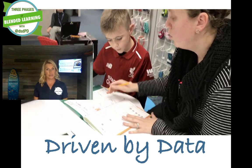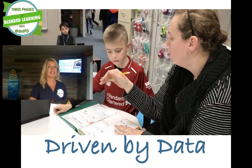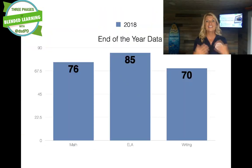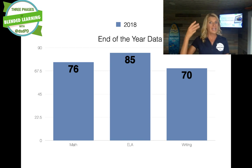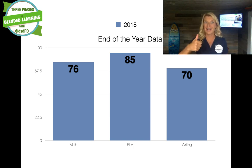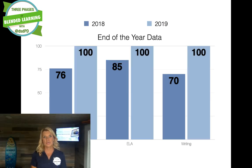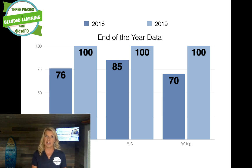This teacher and her co-teacher had data points from before they worked with Marsha Kish — these were their scores in 2018: 76% of their second graders passed math, 85% passed ELAR, and 70% passed writing. That's great — out of 48 kids, pretty impressive. After they allowed the students to work at their own pace, place, and path using data-driven instruction, their scores went up dramatically. All 48 students passed math, 100% passed ELAR, and 100% passed writing — the data showing that this type of blended learning environment works.